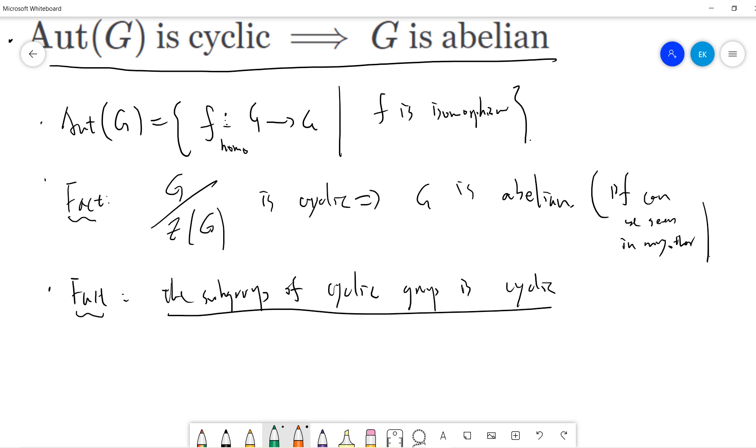Now it's very easy, because G quotient Z(G) is also called the inner automorphism group.